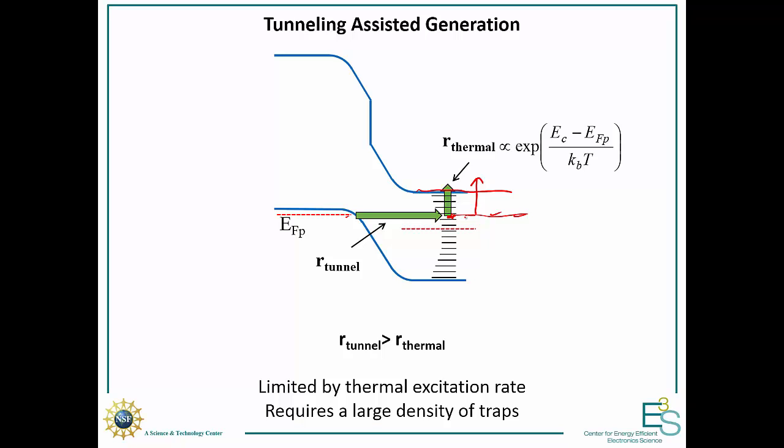We now have a two-step process. First, you tunnel into a trap state, and then you get thermally excited out of that trap state. Whichever rate dominates will limit the current. If the tunneling rate is very slow, our current directly reflects the density of states or the barrier thickness modulation. But if the tunneling rate is relatively fast — say you have a heterojunction and a very thin barrier — then the thermal excitation rate becomes limiting, and that rate is proportional to a Boltzmann factor, so the turn-on is directly thermal.